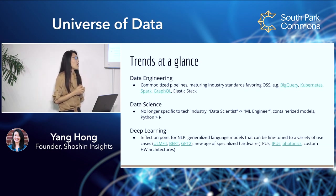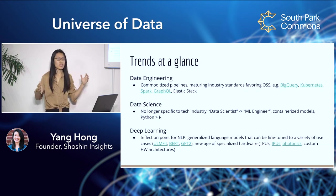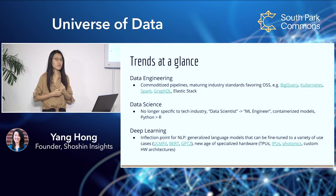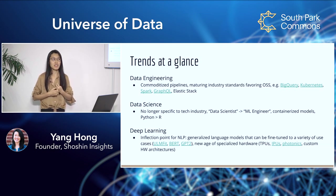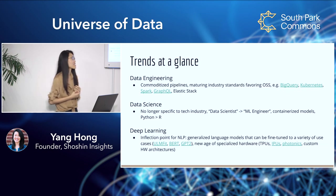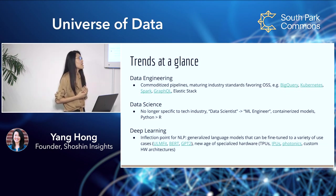So now we have one giant model that can do a ton of different applications. BERT and GPT-2 from OpenAI beat essentially most of the state of the art across at least nine different benchmarks. Pretty impressive.